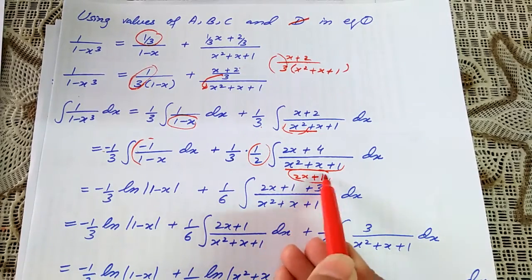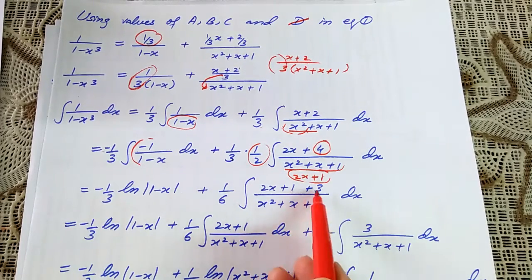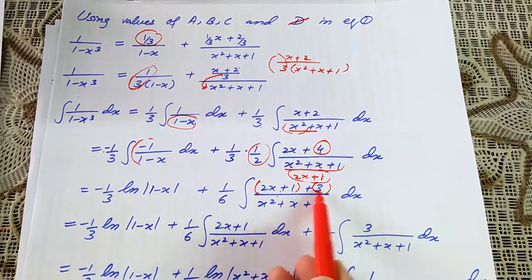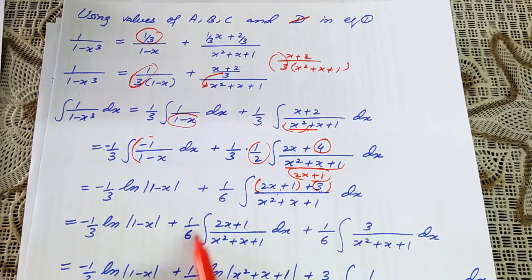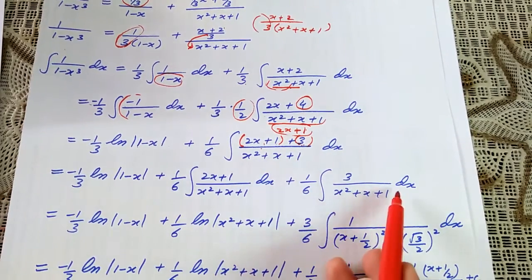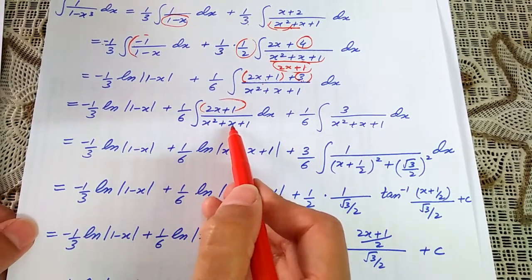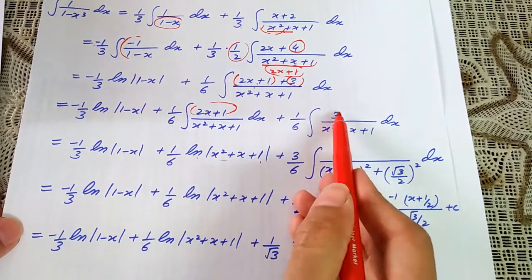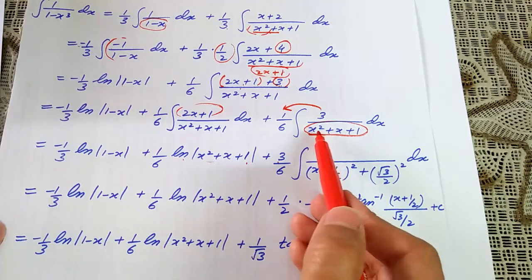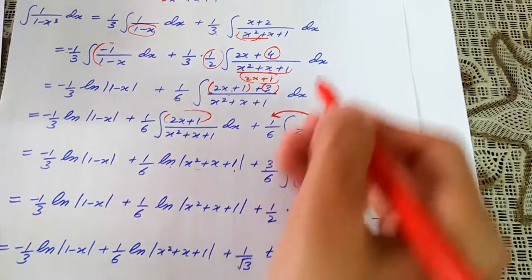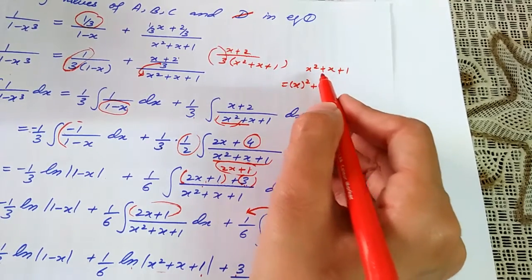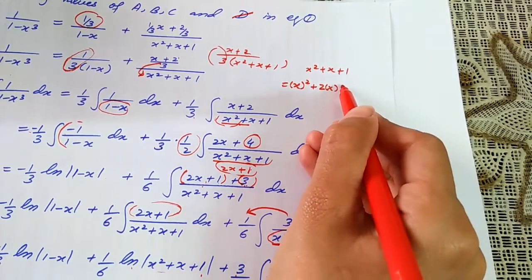The derivative of x² + x + 1 is 2x + 1, so we need 2x + 1 in the numerator. Break 4 into 1 + 3: treat 2x + 1 as one part and 3 as a separate part, dividing the denominator towards each numerator separately. This gives (1/6)∫(2x + 1)/(x² + x + 1) dx plus (1/6)∫3/(x² + x + 1) dx. Since the numerator of the first is the derivative of the denominator, it becomes ln(x² + x + 1). Now complete the square.